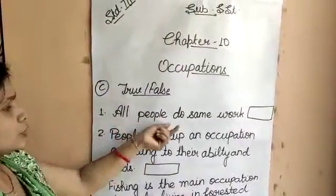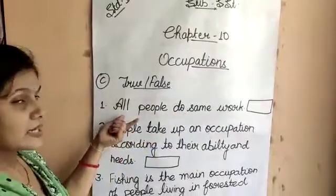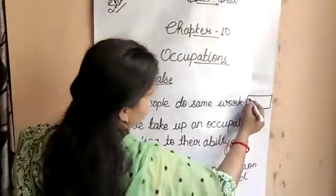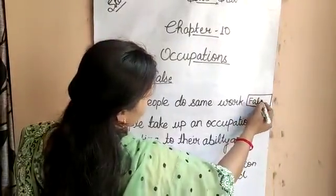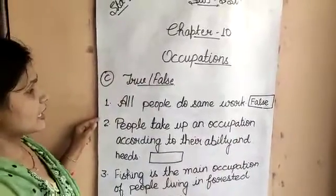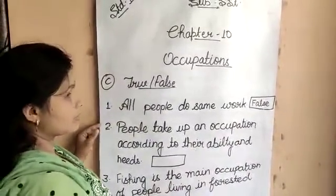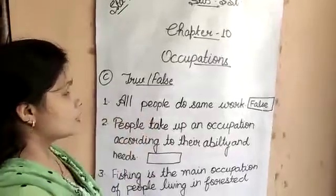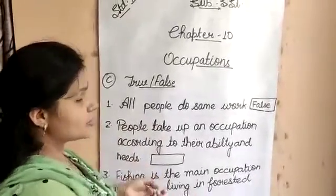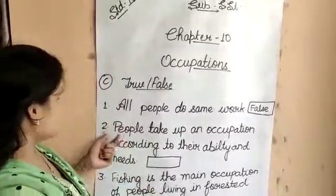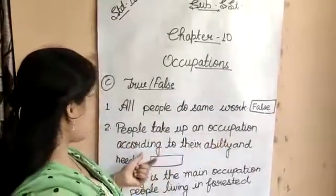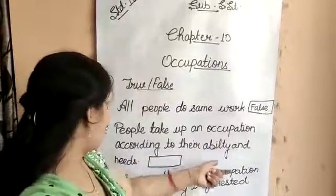The first question: All people do the same work. This is false, because people do not all do the same work — they work according to their needs, interests, and abilities.